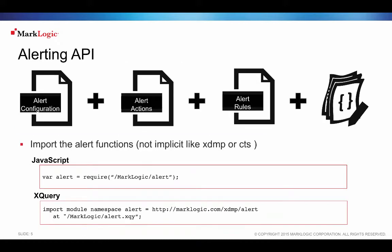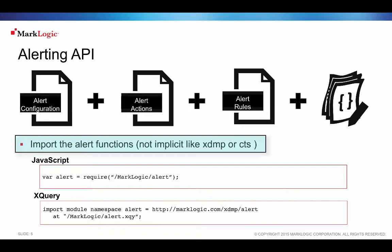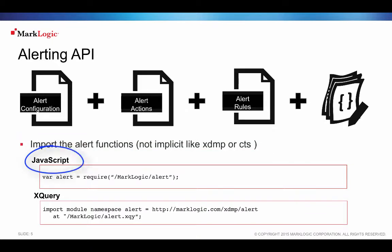The alerting API is implemented as an XQuery library module, callable from either MarkLogic server-side JavaScript or XQuery. The API is designed to help you build robust alerting applications. It handles the details for security in the application and provides mechanisms to set up all components of an alerting application. It is designed to make it easy to use triggers and content processing framework, abbreviated CPF, to keep the state of documents being alerted.